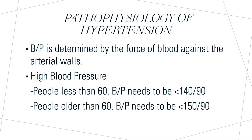First, I want to start off with the pathophysiology of hypertension. What is hypertension? Hypertension is when there is an increase in the blood pressure greater than 140 over 90 in adults younger than 60 years old, and 150 over 90 in those who are older than 60 years of age. You want adults younger than 60 to have a blood pressure less than 140 over 90, and those older than 60 to have a blood pressure less than 150 over 90.